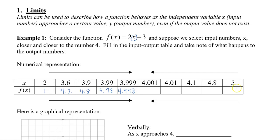Starting from the other direction with a larger number, say 5: plugging in 5 gives 2 times 5 minus 3, which is 7. For 4.8, I get 6.6. For 4.1, I get 5.2. For 4.01, I get 5.02. And for 4.001, I get 5.002. So as my x value approaches 4, my output gets closer and closer to the number 5.